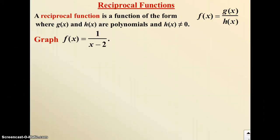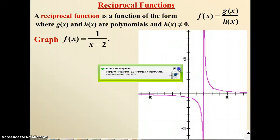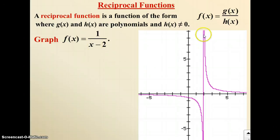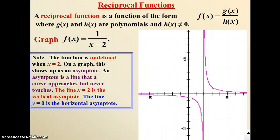If you have to graph f(x) equals 1 over (x minus 2), here's what a reciprocal function will look like. The thing to remember is it has a vertical line — we call that a vertical asymptote — and that vertical line is at the non-permissible value for this function. x cannot equal 2; that's the equation of this line, x equals 2, our asymptote. The function is undefined when x equals 2, and on the graph this shows up as a vertical asymptote through x equals 2.